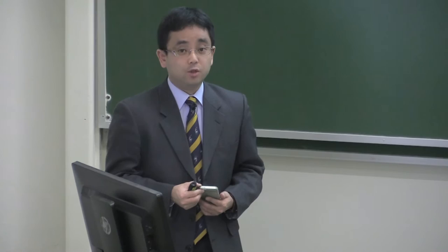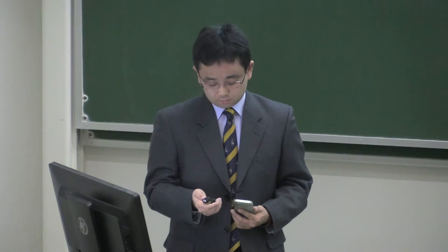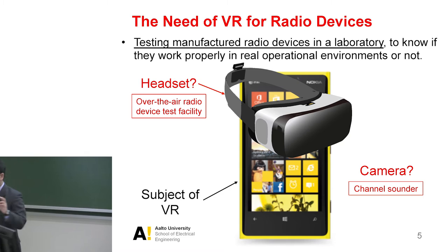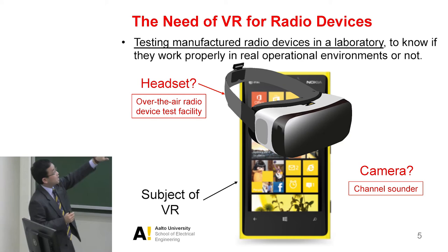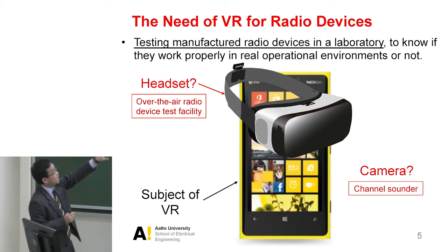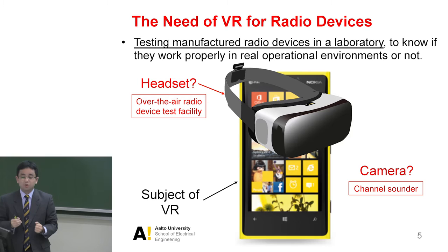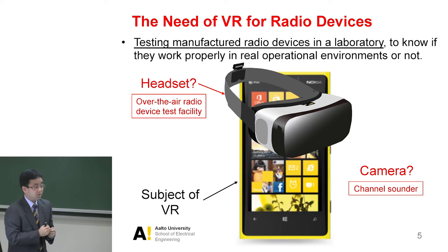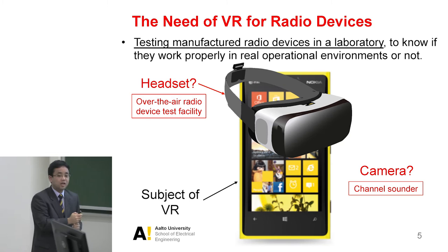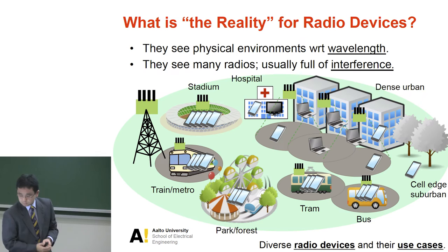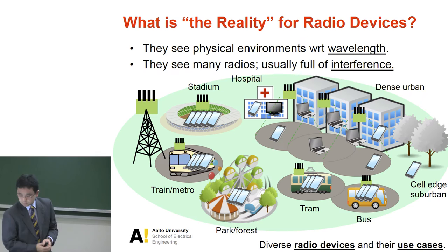In radio engineering, virtual reality and augmented reality is really the way to go — the technology that device vendors truly require. If we take the context of human VR or AR, the mobile phone would wear a headset and need a camera to record reality and play external information on top. But how do those headsets and cameras look in terms of radio engineering? That's something I'm going to introduce in the remaining time.